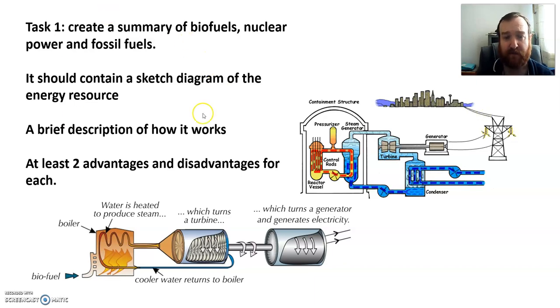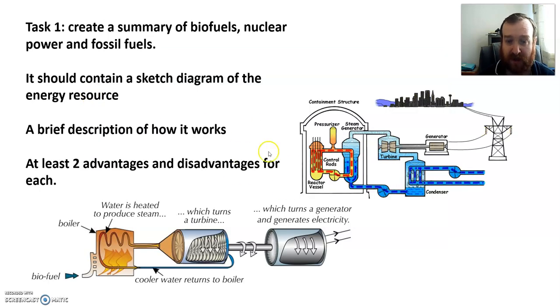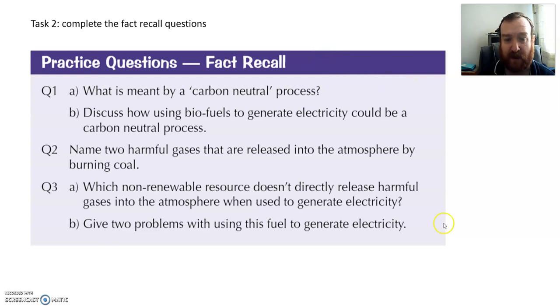Okay, that's your first task. Your second task is to give a go of these practice factory call questions. So first job, summary of the three types. Second job, we need to give these fact questions a go. Now I've got the answers on the next slide, and these are going to be attached as well to the class charts. So pause it until you've given these questions a go, and then you can use the answers to check your answers and give them a little bit of a mark.